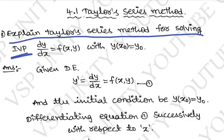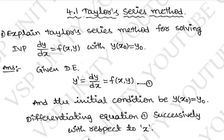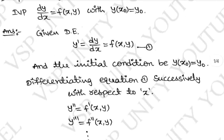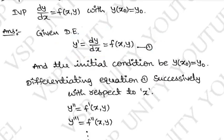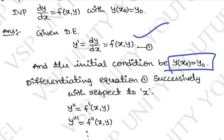Explain the Taylor series method for solving the initial value problem. IVP means initial value problem. dy/dx = f(x, y) with y(x0) = y0. Given differential equation: y' = dy/dx = f(x, y), and the initial condition y(x0) = y0. Differentiating equation 1 successively with respect to x.